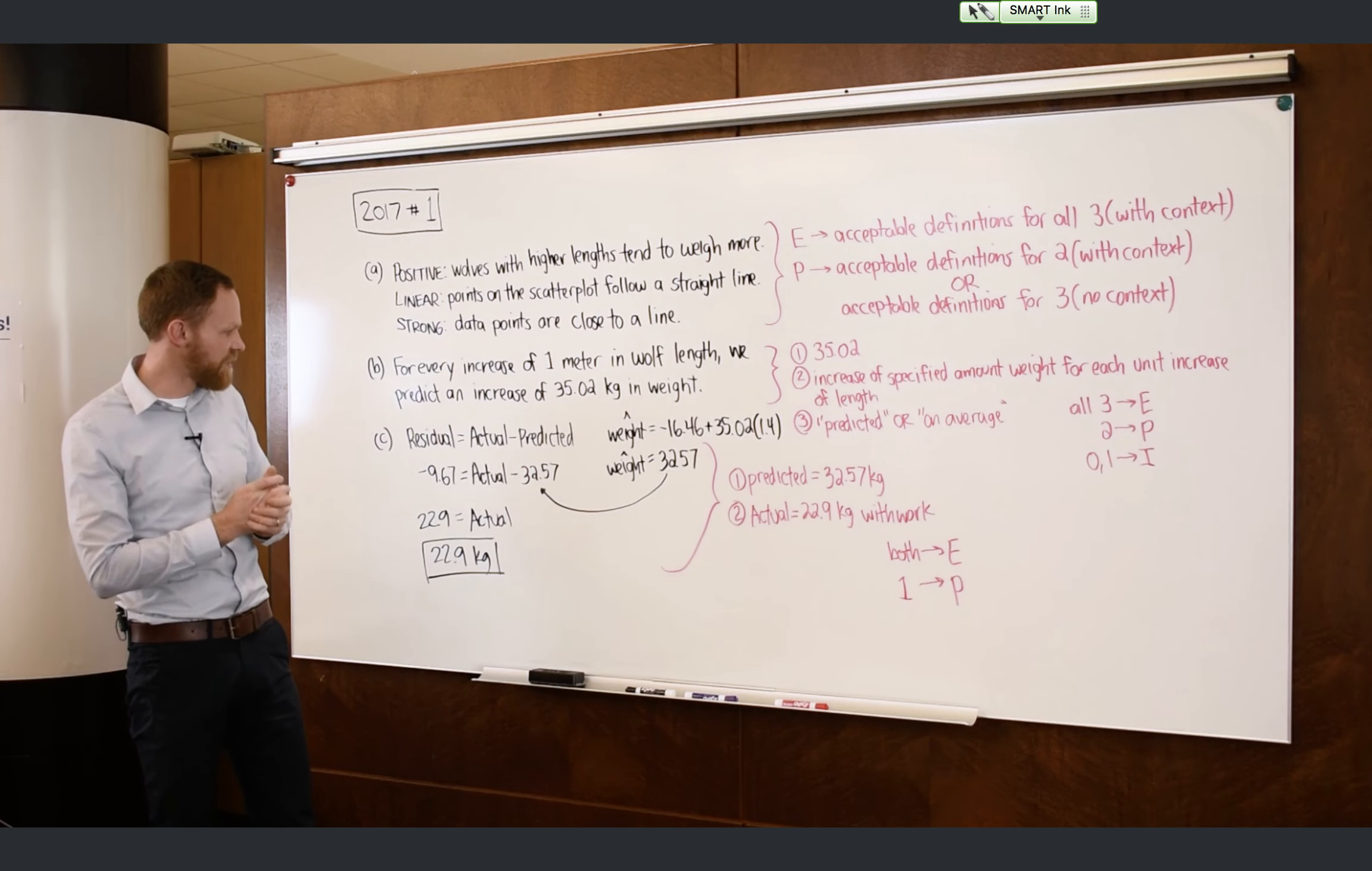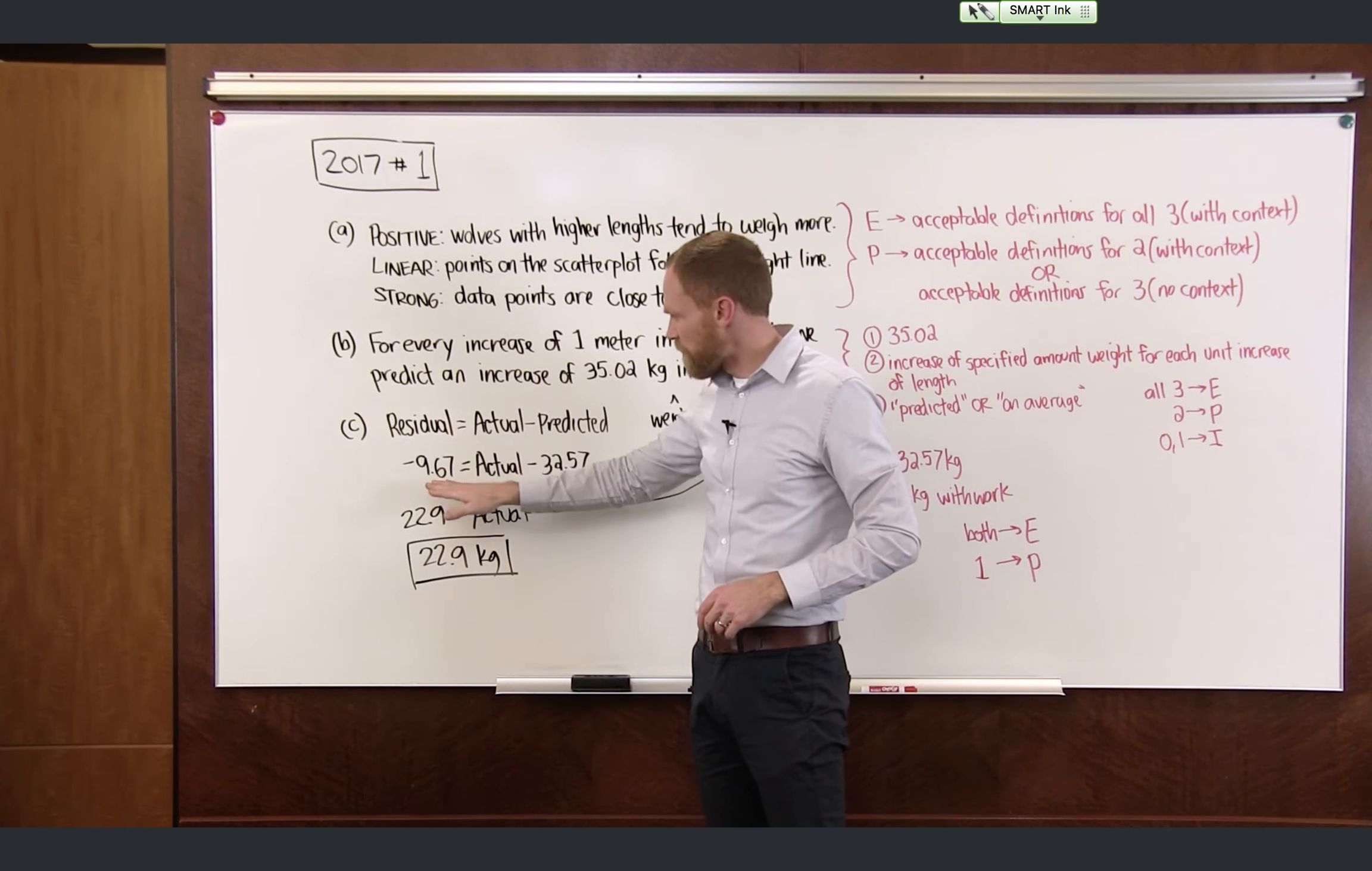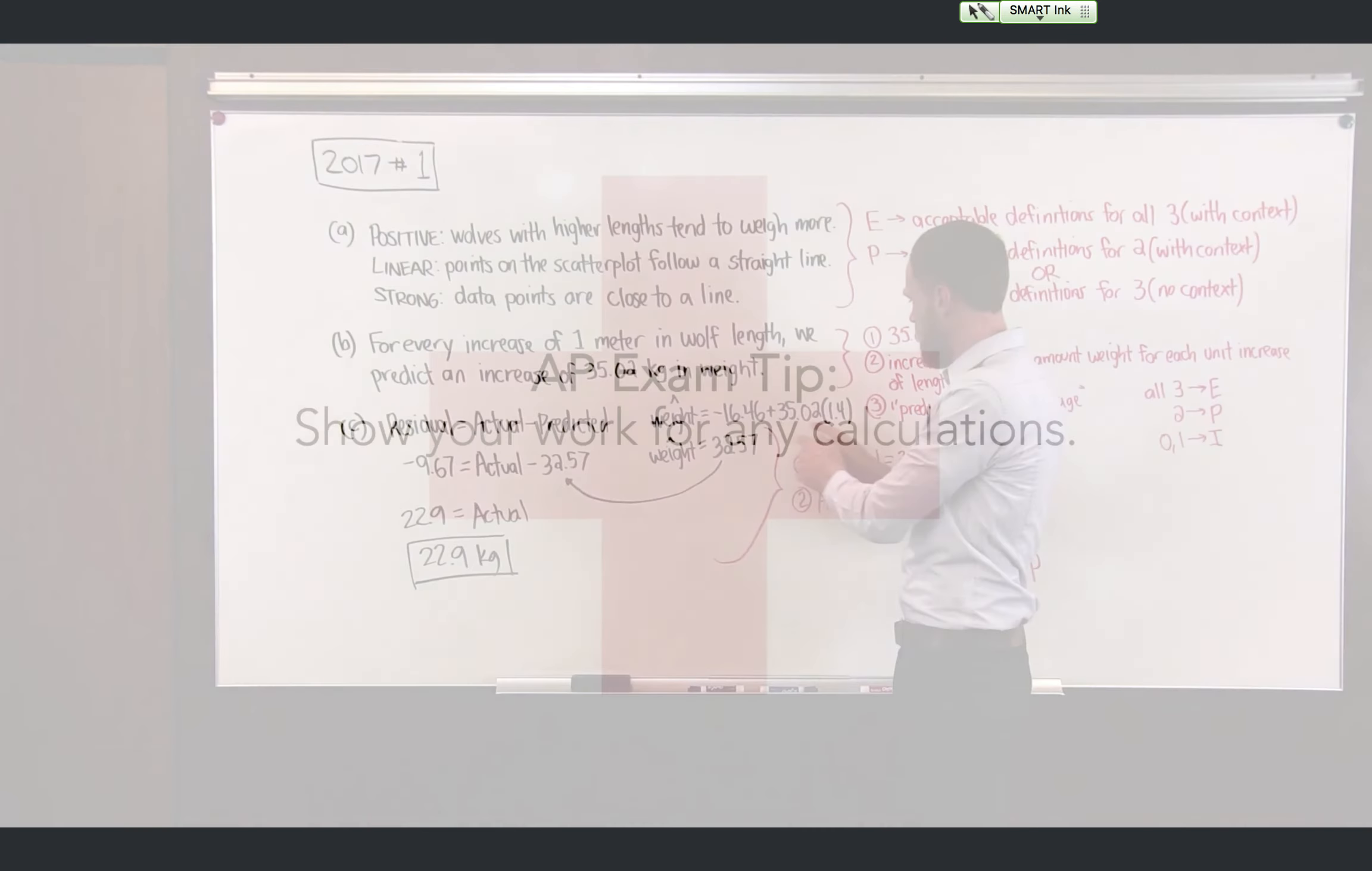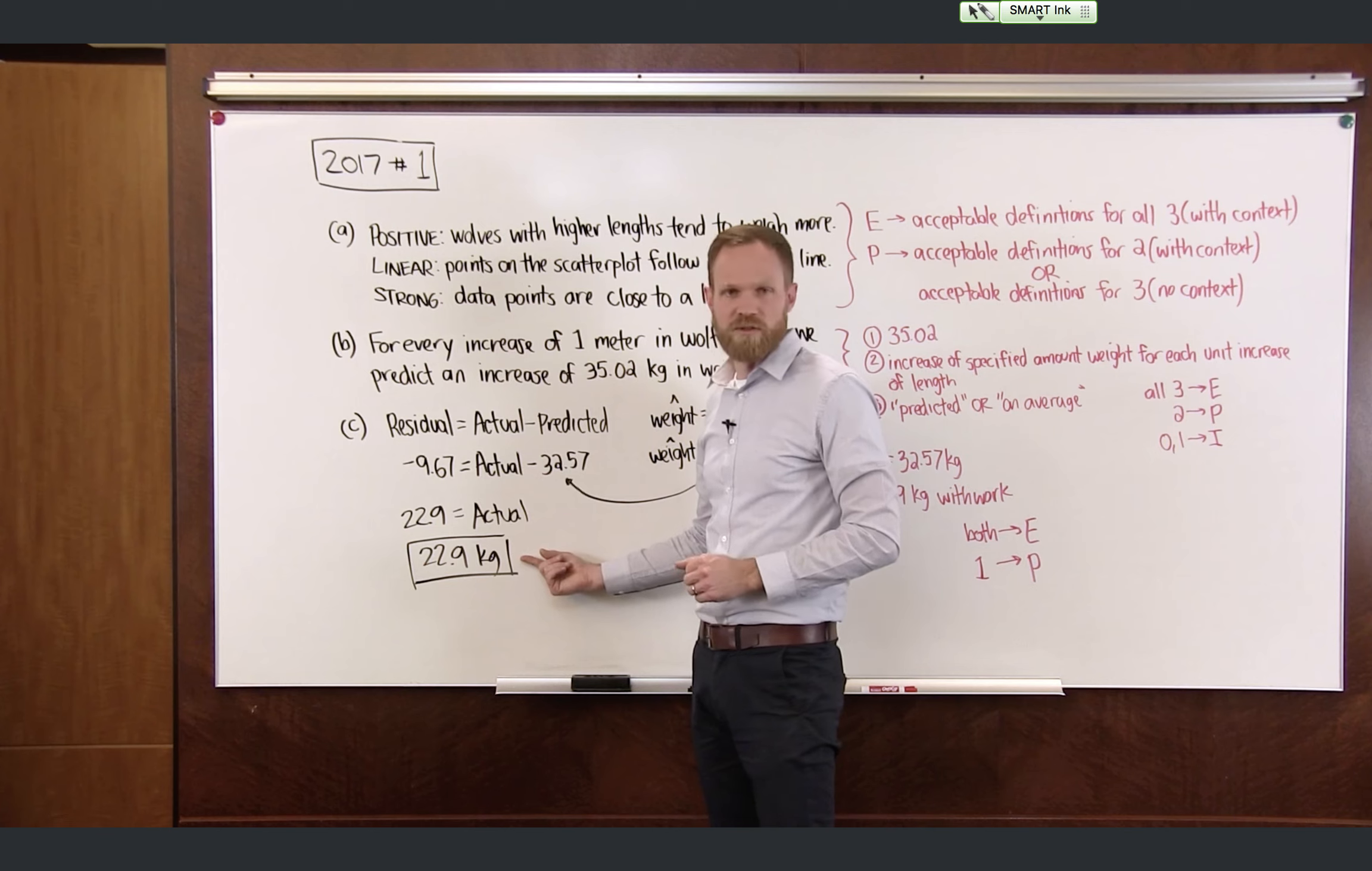Now the last part of this question, Part C, they asked us to calculate the actual weight of a particular wolf. And they gave us the residual. And so you have to remember the relationship between actual and predicted. And you got to remember the correct order here. Actual minus predicted is what gives you your residual. Now in this problem, we were given the residual and asked to find the actual. So the other piece of information that we need is the predicted weight of this particular wolf. So I've shown the work here where we took the equation for the line of best fit, and we've plugged in the length of the wolf at 1.4, which has allowed us to make a prediction for what that wolf should weigh. So we go back here and we plug that in for the predicted value, which allows us to then solve for the actual weight of the wolf. And we see here that the actual weight of the wolf is 22.9 kilograms.